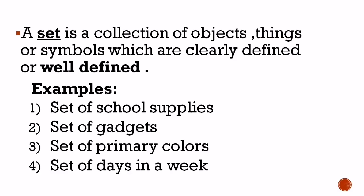A set is a collection of objects, things, or symbols which are clearly defined or well-defined. For example: set of school supplies — scissors, pencil, notebooks, etc. Set of gadgets. Set of primary colors. Set of days in a week. Can we give examples? Yes — scissors, pencil, notebooks, etc.